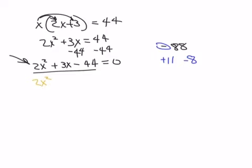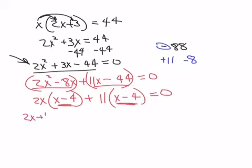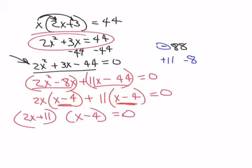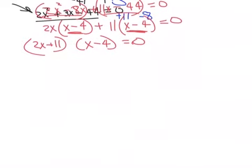2x squared plus 11. Now let's do 8. Keep the negative on the 8x and put the positive there. Group, group. What can I pull out of there? A 2x. And I'm left with an x minus 4. And here I can pull out an 11. And I'm left with x minus 4, which is exactly what I should. These two should be the same. Put the 2x plus 11 in one parenthesis. An x minus 4 in another. And I factored this whole thing. But I need to make it equal to 0.